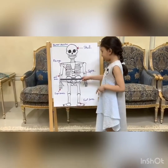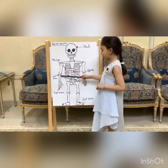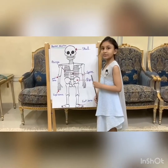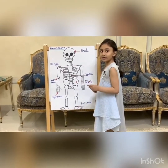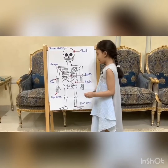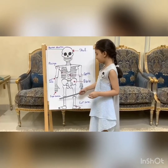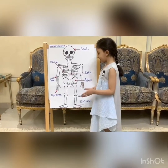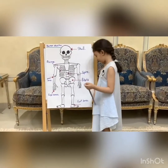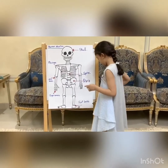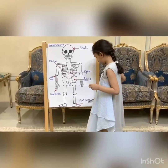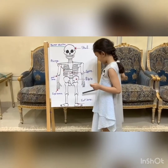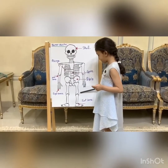This is the arm bone. It helps us move our arms. This is the finger bone. It helps us move our fingers. This is our foot bone and our leg bone.